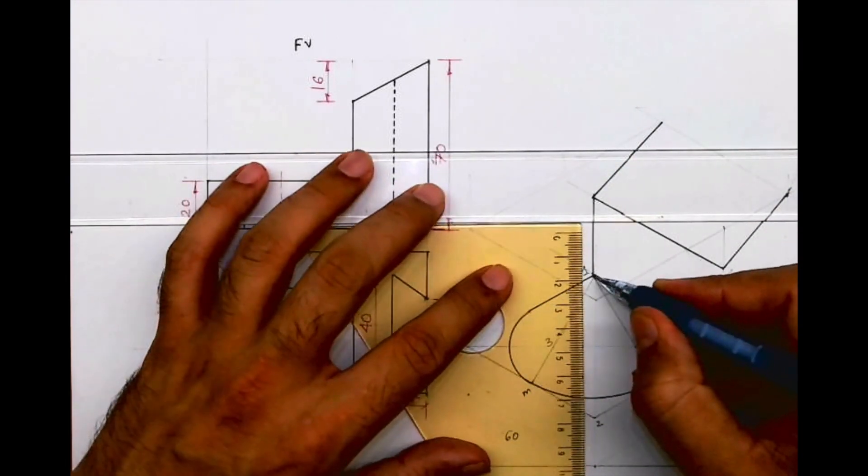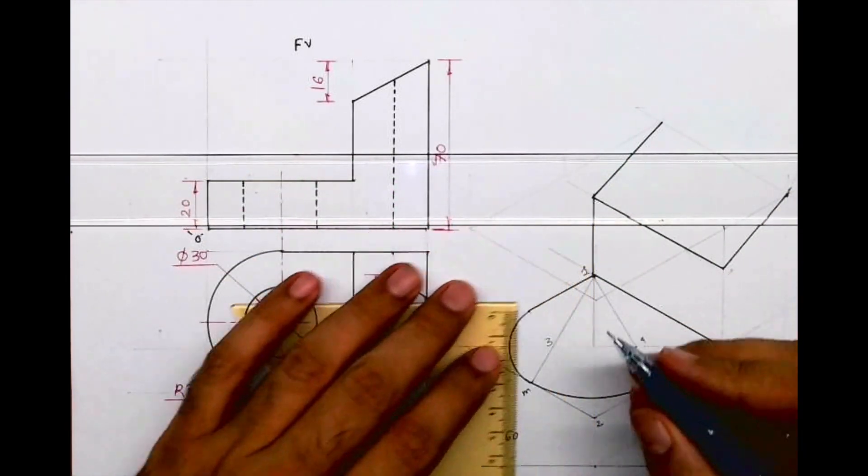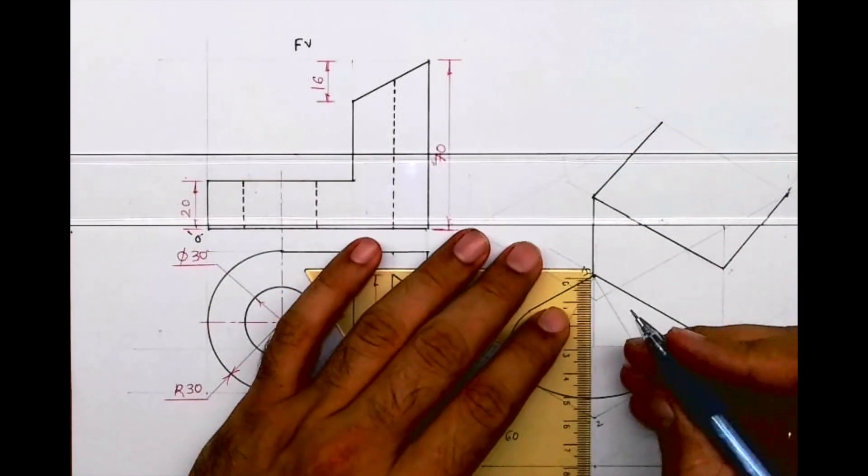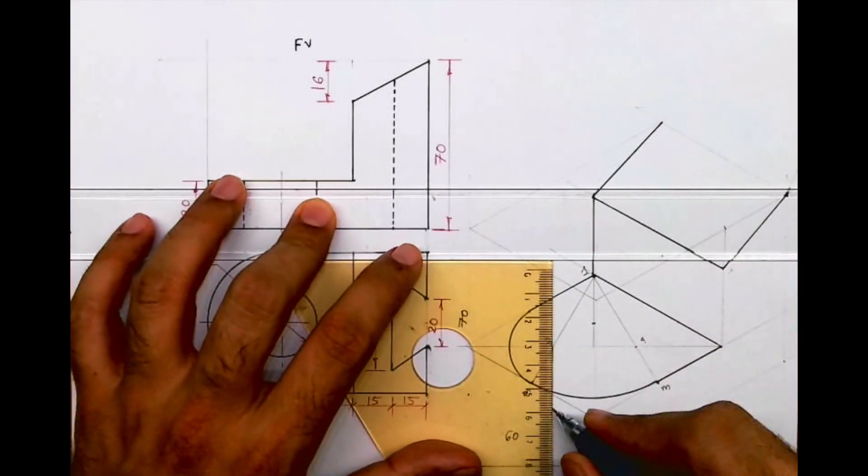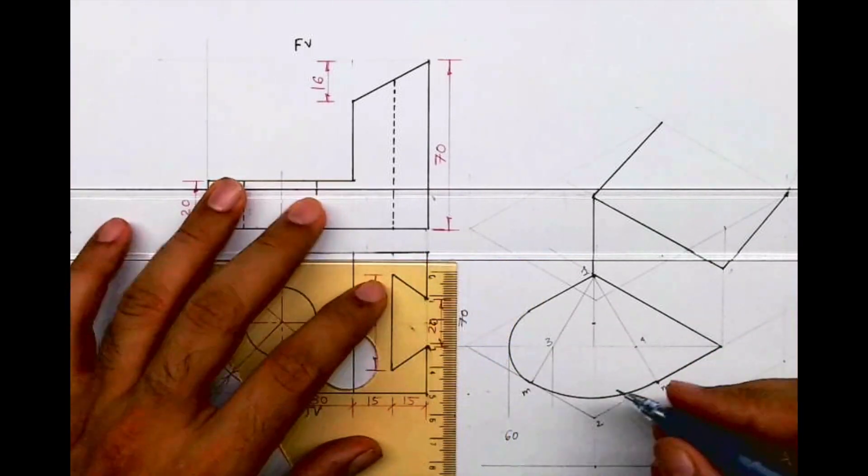I have to go down by 20, so I'll take point 1 down by 20 because height is 20. So this is 1 dash. From 3 I will go down by 20 and here also I will draw tangent.